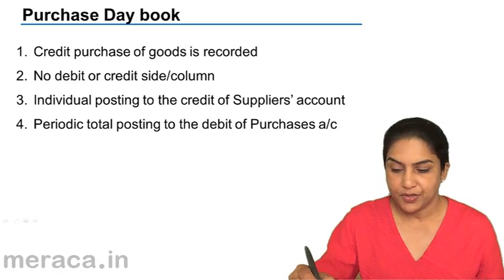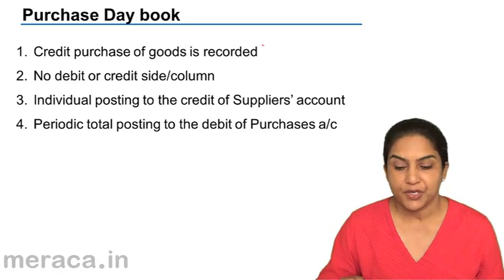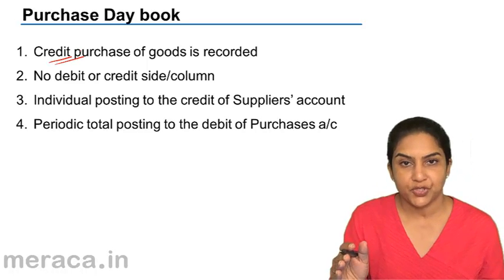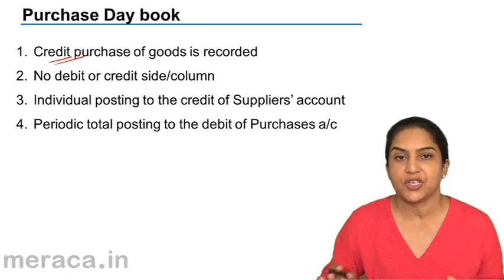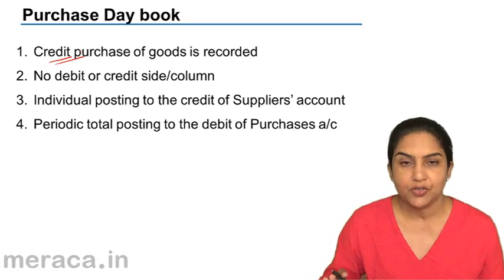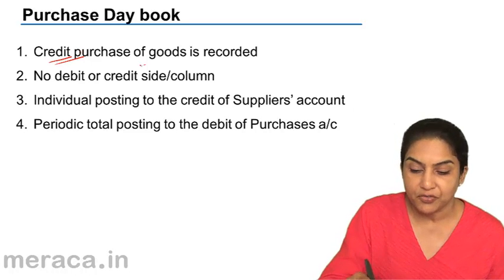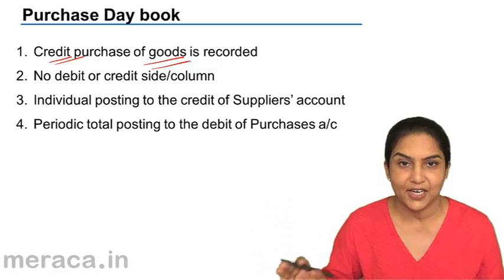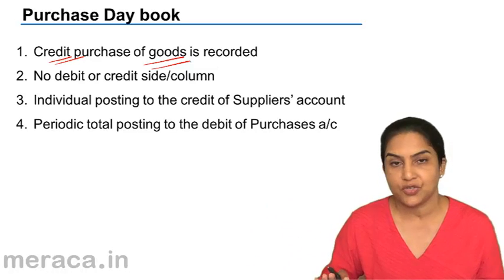The purchase day book is where credit purchases of goods are recorded — credit purchase, not cash purchase. If it's a cash purchase, it goes to the cash book. Any cash transaction will go to the cash book. We are talking of a credit purchase of goods meant for sale. So only credit purchase of goods is recorded here.